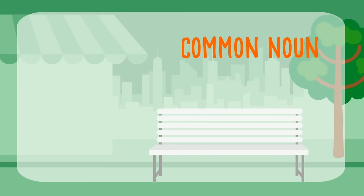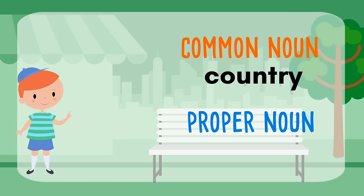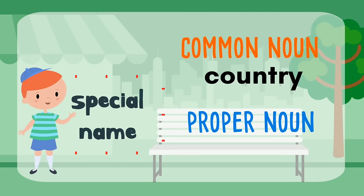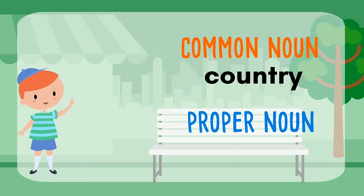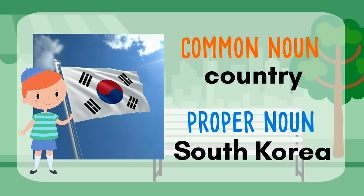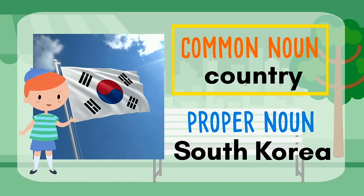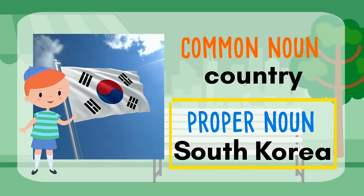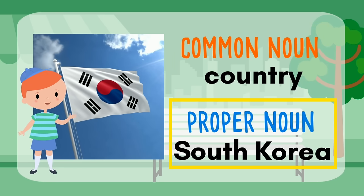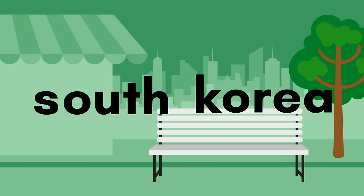Let's think of a place common noun — how about a country? A proper noun gives a special name to the common noun. How about South Korea? That's the name of a country. A country is a common noun because it's a place, and South Korea is a proper noun because it's the special name of that country.